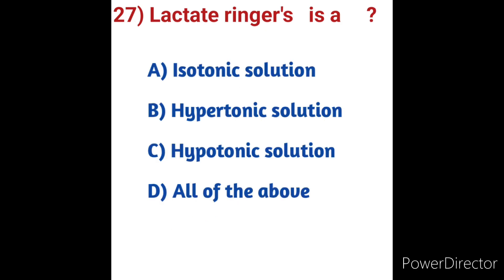Question number twenty-seven: Ringer's lactate is? Options: A) Isotonic solution, B) Hypotonic solution, C) Hypertonic solution, D) All of the above. Ringer's lactate (lactated Ringer's solution) is a type of isotonic crystalloid fluid, classified as a balanced solution used for fluid replacement. Isotonic solutions such as normal saline (0.9% NaCl), Ringer's lactate, D5W, and Ringer's solution have the same osmotic pressure as blood. Option A, isotonic solution, is the correct answer.